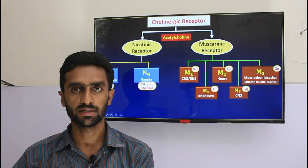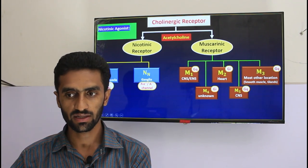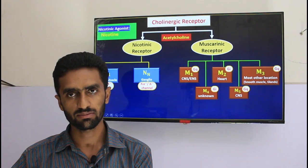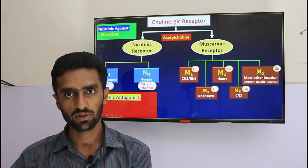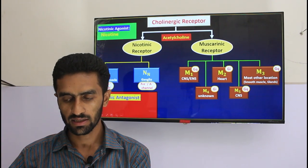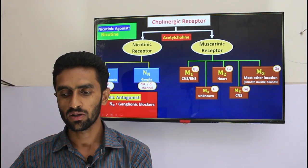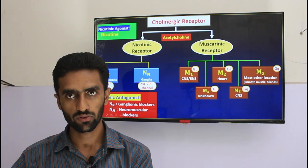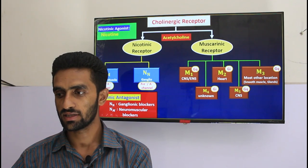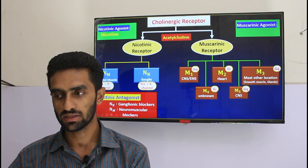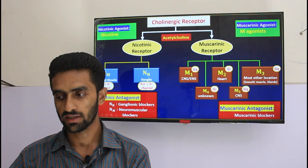Now we look at cholinergic drugs pharmacology. The nicotinic agonist for nicotinic receptors includes nicotine, which is selective for those receptors. Antagonists for nicotinic receptors can be ganglionic blockers acting on the NN subtype, or neuromuscular blockers. Today we focus on the agonists and the muscarinic agonists.